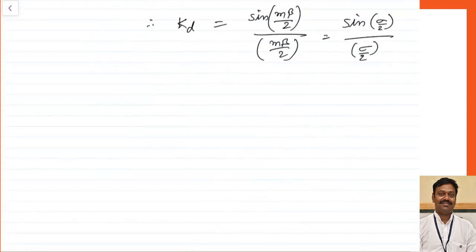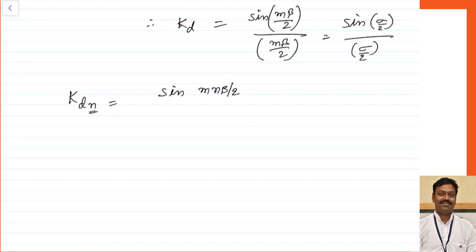For the nth harmonic, the distribution factor Kd_n is written with n multiplied in because the nth harmonic rotates at n times the velocity, so automatically the angle also becomes n times. This becomes sin(m·n·β/2) divided by m·sin(n·β/2).